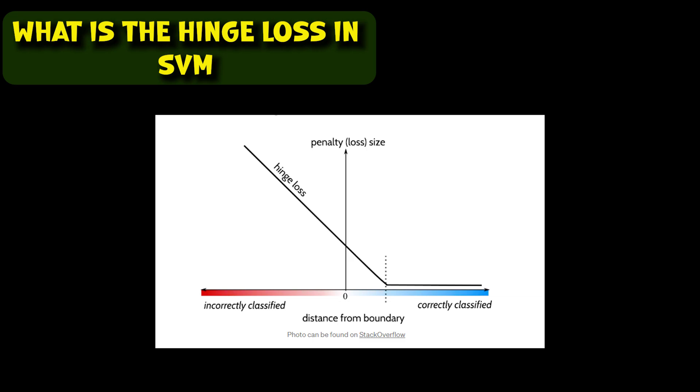A negative distance from the boundary incurs a high hinge loss. This essentially means we are on the wrong side of the boundary and the instance will be classified incorrectly. On the flip side, a positive distance from the boundary incurs a low hinge loss or no hinge loss at all.